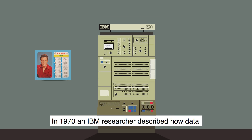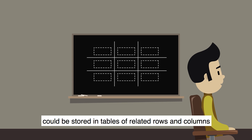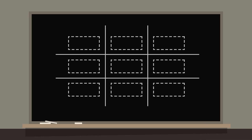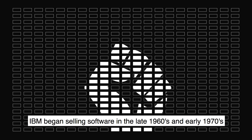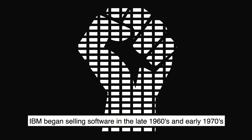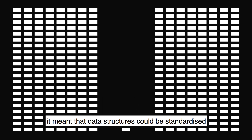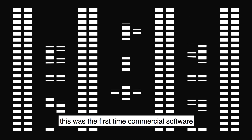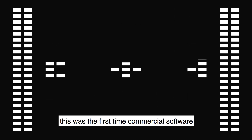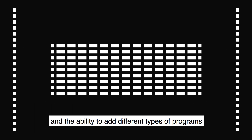In 1970, an IBM researcher described how data could be stored in tables of related rows and columns. The idea revolutionized the IT industry. IBM began selling software in the late 1960s and early 1970s, meaning data structures could be standardized so that different programs could use the same data. This was the first time commercial software was available to the average customer, and the ability to add different types of programs to any computer quickly became popular.